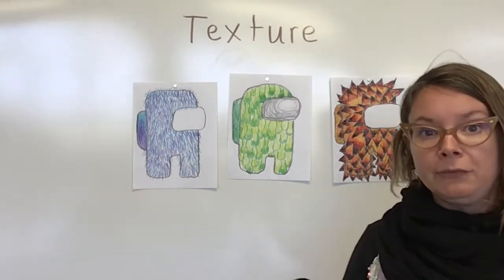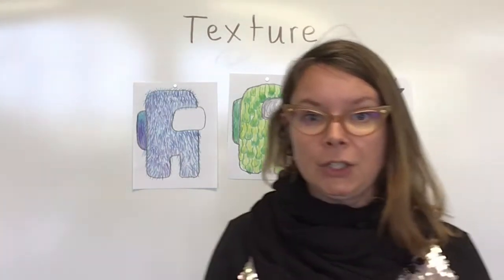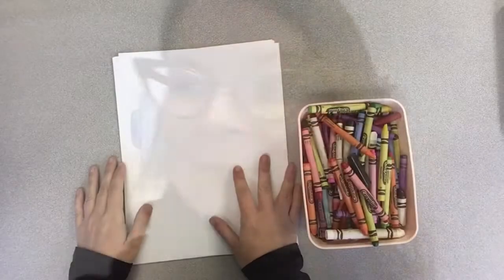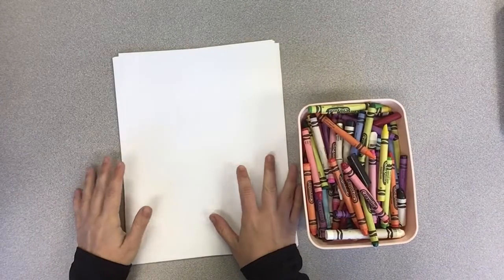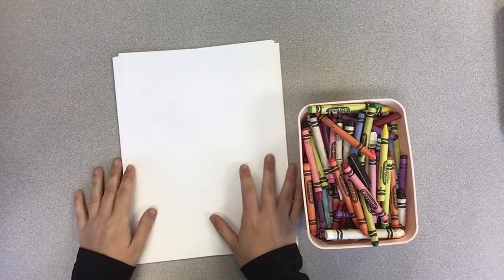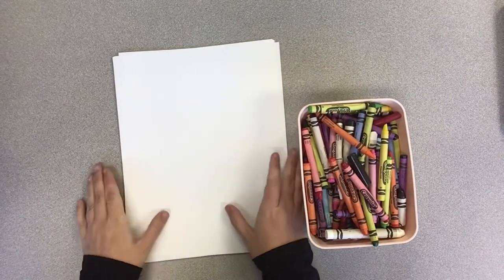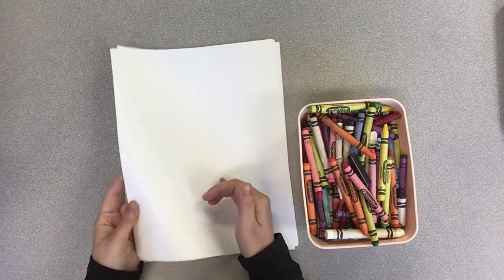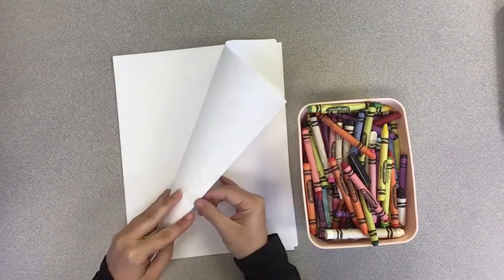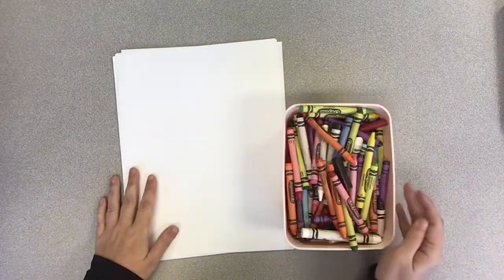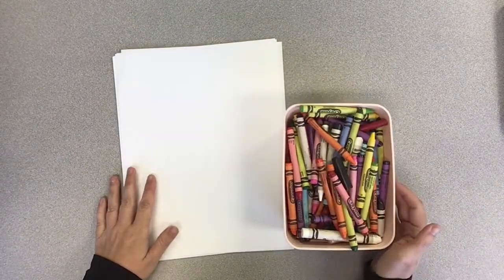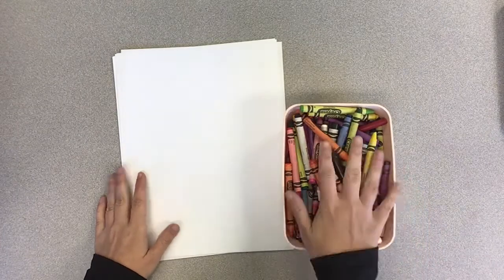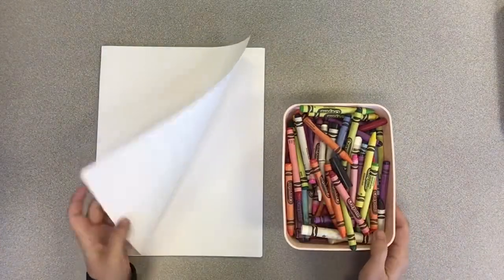I'm going to flip the camera to table mode and show you how to follow along. I hope you have fun. The only things you're going to need for this activity are simple white printer paper and crayons. Hopefully you all have those at home.